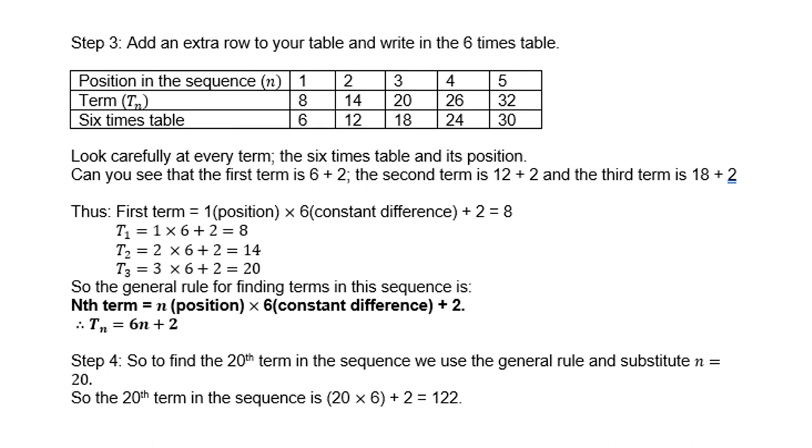So the general rule for finding terms in this sequence is therefore, the nth term is n, which is the position, times 6 times the constant difference plus 2. So the general formula is Tn equals 6n plus 2.